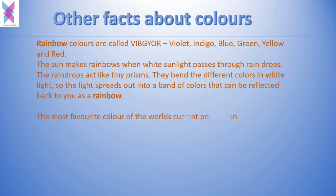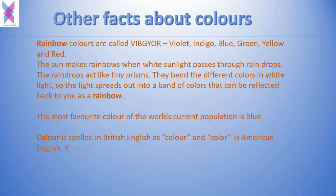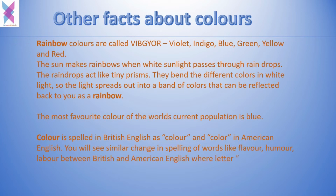Did you know the most favorite color of the world's current population is blue? The word 'color' is spelled in British English as C-O-L-O-U-R and C-O-L-O-R in American English. You will see similar changes in spellings like flavor, humor, and labor between British and American English, where the 'u' is missing in American English.